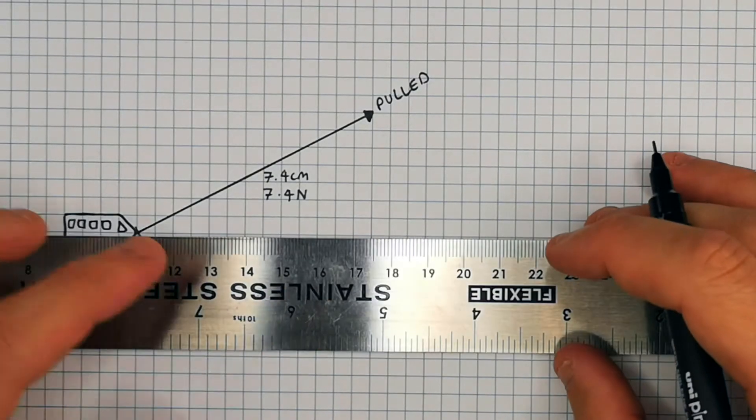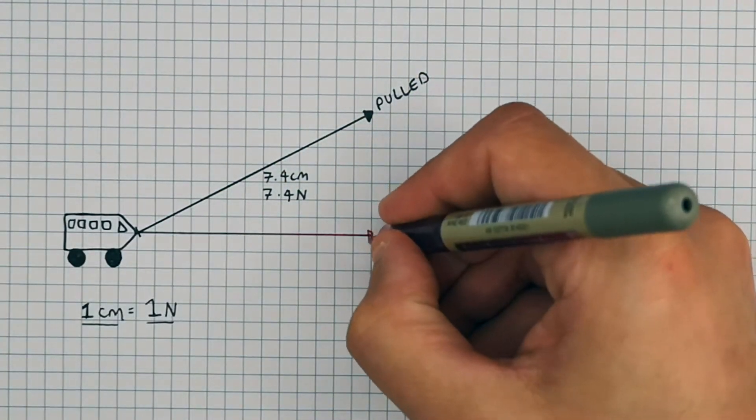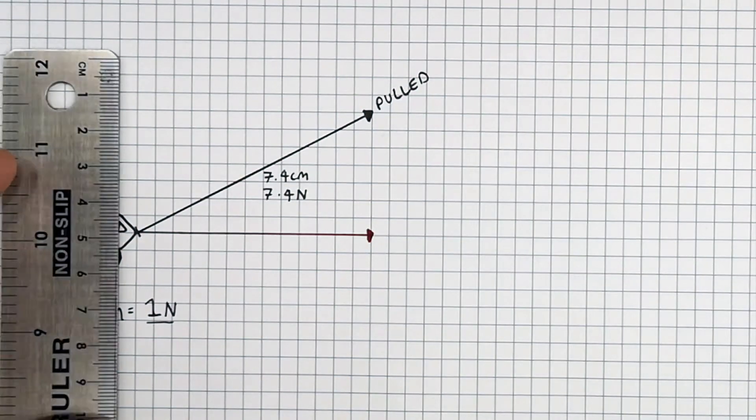So we can now draw a line up to the tip of the diagonal force. And that is the horizontal component. And then you can draw the vertical component.